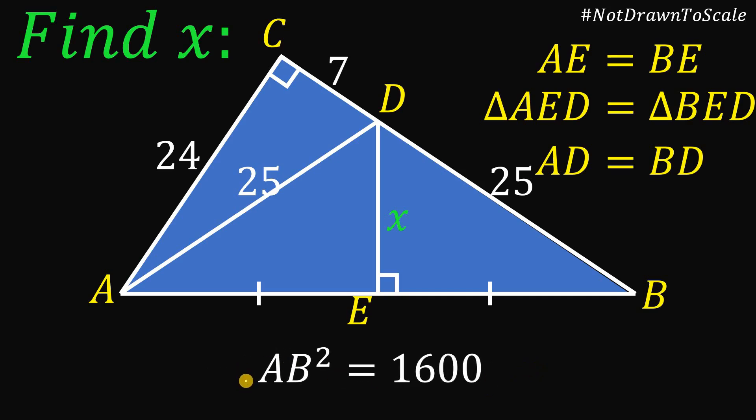And to solve for the value of side AB, we get the square root on both sides, and square root of 1,600 is just 40. So the length of segment AB must be equal to 40. And since AE must be equal to EB, therefore, this AE is 20, and this EB is also 20. So a total of 40.